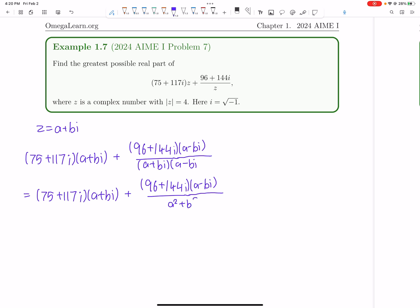And now the key idea here is most of these terms or half of these terms are imaginary. So we just focus on the real terms in each expression. So the real terms in the first expression are 75a and then minus 117b because i times i is negative 1. Over here, in the top part, the real part is 96a, 96a and then plus 144b. And then all over a squared plus b squared.